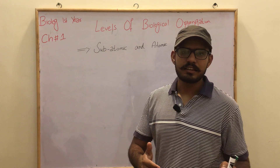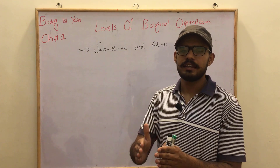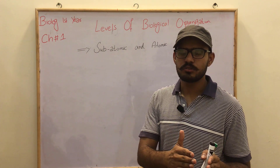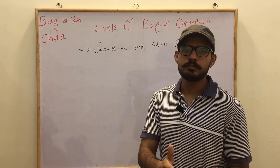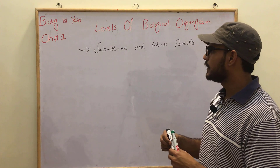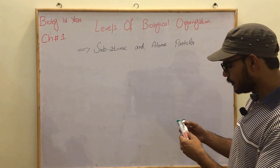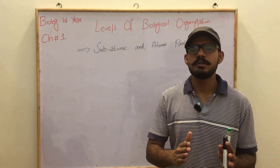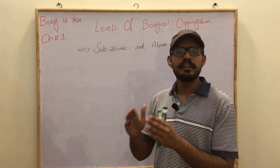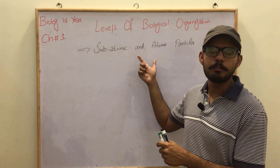The first level of biological organization is the sub-atomic and atomic level. Today we will discuss how many things can be found, and whether they have the ability to exist in life or not. All of these are called sub-atomic and atomic particles.